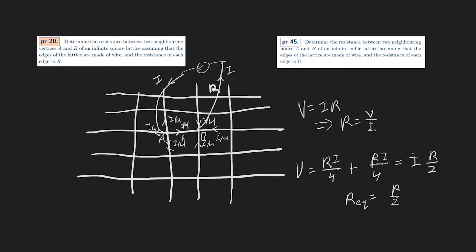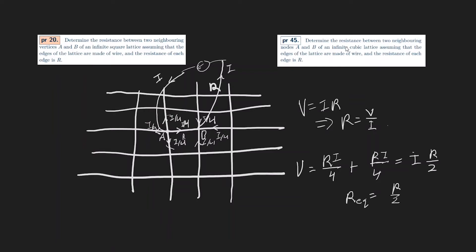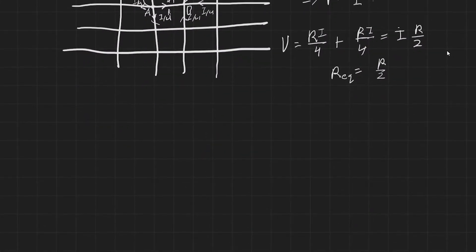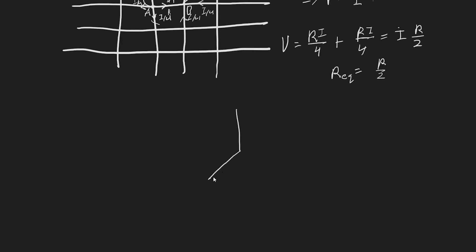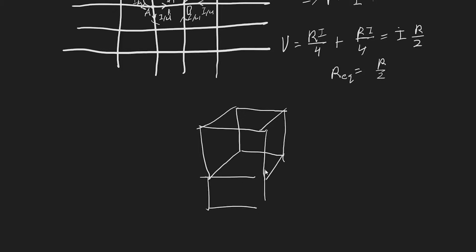For the infinite cubic lattice, we're going to do almost the exact same thing — drive in a current and take out a current, superpose those, and see what happens. Let me read the problem first: determine the resistance between two neighboring nodes A and B of an infinite cubic lattice, assuming that the edges of the lattice are made of wire and the resistance of each edge is R. So let me draw the cubic lattice. Basically there are cubes everywhere, and let's focus on one corner, since that's going to be helpful.